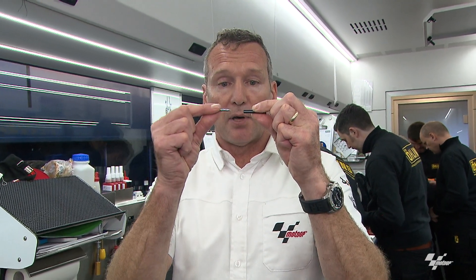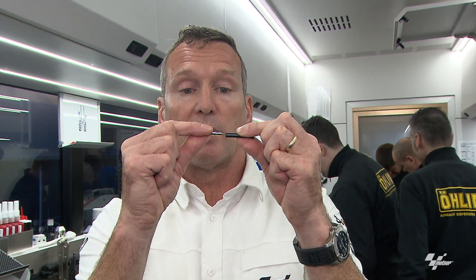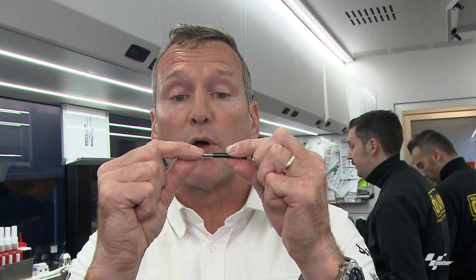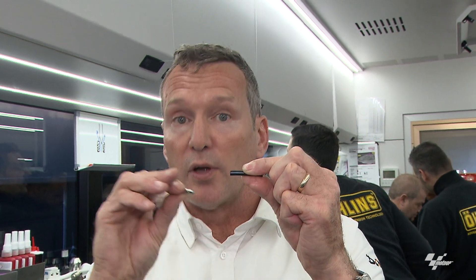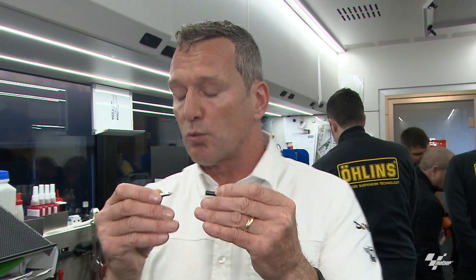To explain low speed: all it is is oil getting pushed through a hole and restricted by a needle. The more you close those clickers, the more the needle goes into the hole and closes it off. The more you open it up, the more the oil flows. That's the low-speed control — when the piston's moving slowly, pushing the oil. When you open the throttle, the weight transfers to the back — that's what the low speed controls.